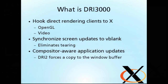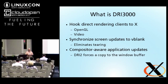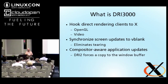I'm working on solving this problem, and in conjunction with solving some of the other persistent problems in X with direct rendering, implementing a new system that I call colloquially DRI 3000. DRI 3000 actually consists of two separate pieces: the DRI3 extension, which hooks direct rendering applications like OpenGL or media applications directly to X, and a brand new extension called Present, which takes application contents and puts them on the screen.